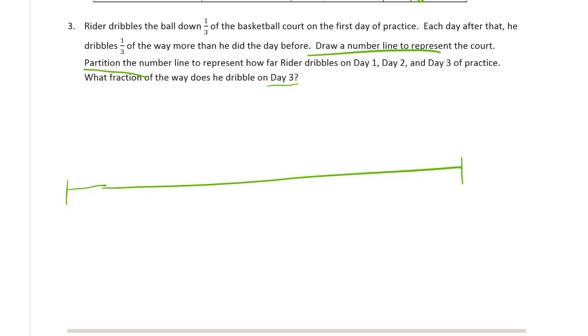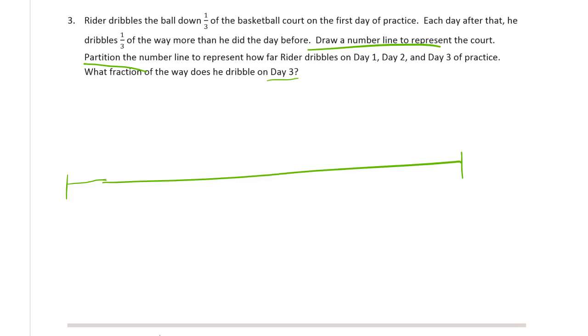Because you only get one third. Each day after that, he dribbles one third of the way more than he did the day before. So we need thirds. That's about as good as I can get them for thirds. So this would be zero, one third, two thirds of the court, three thirds of the court.